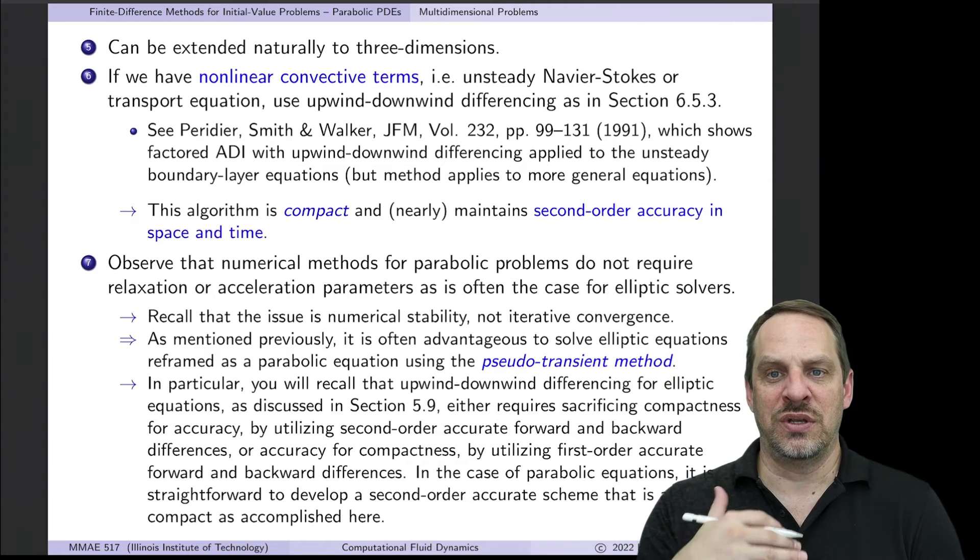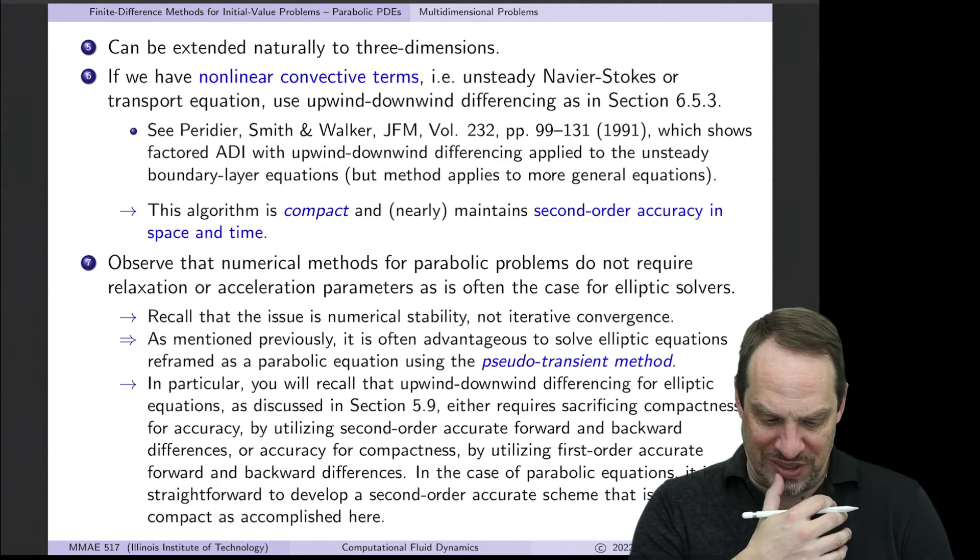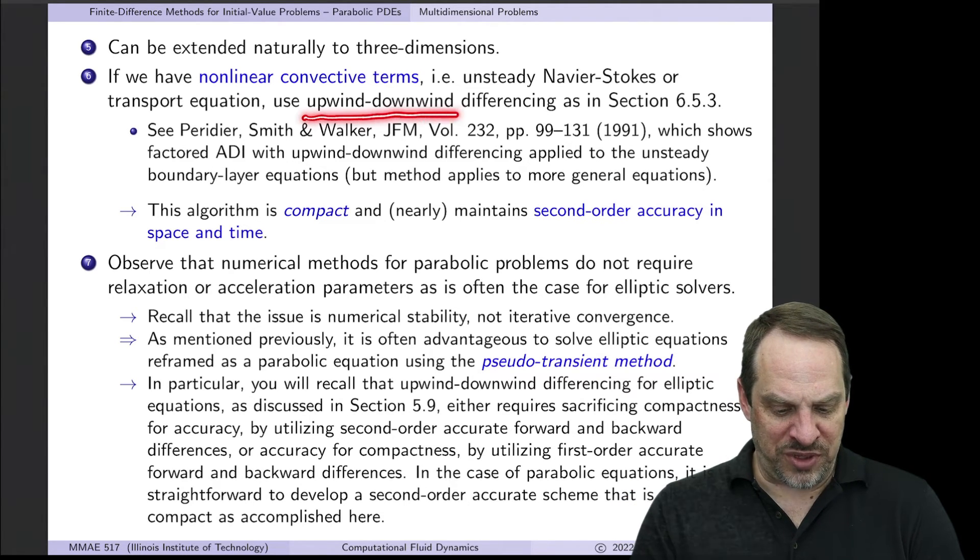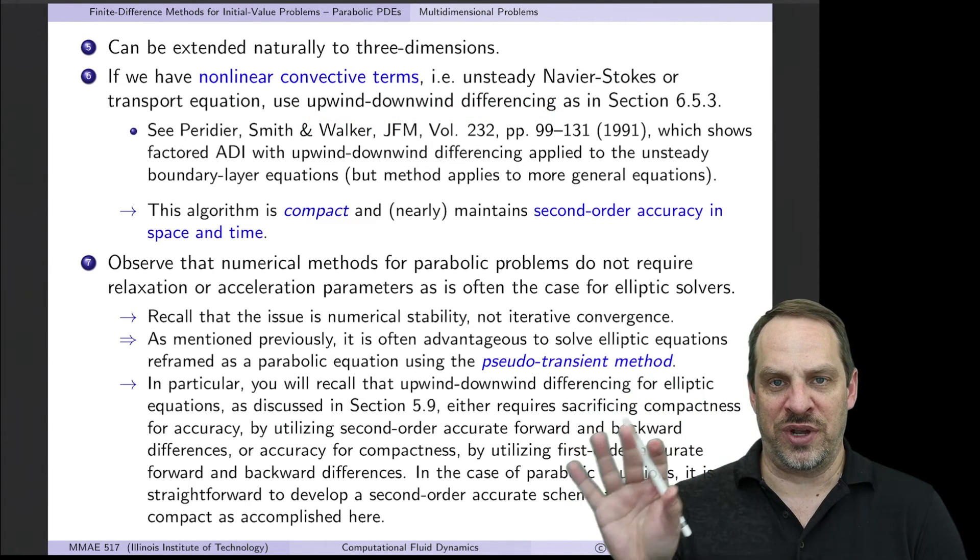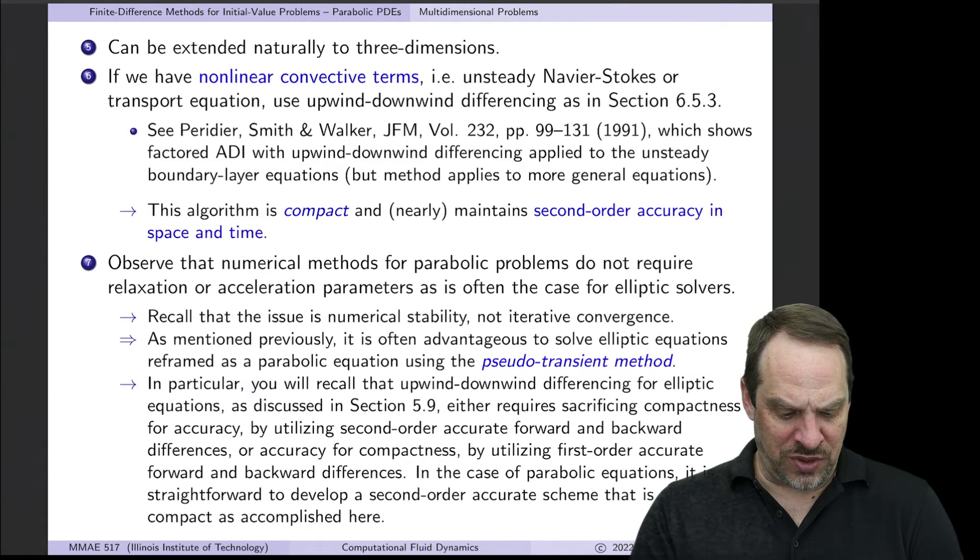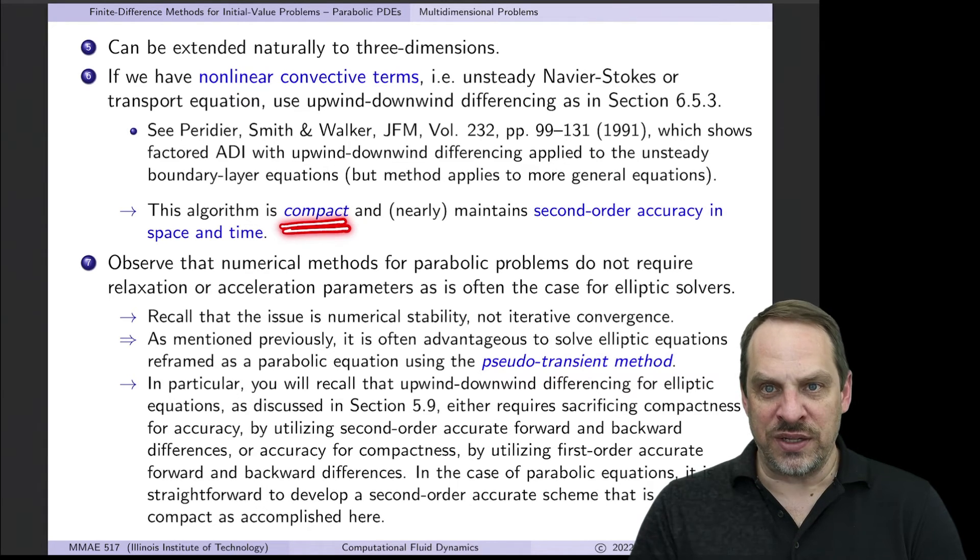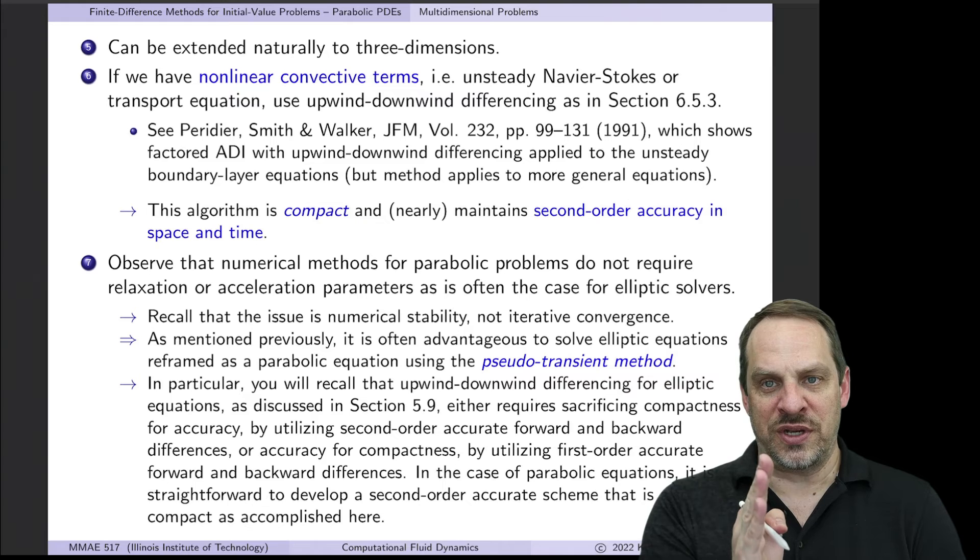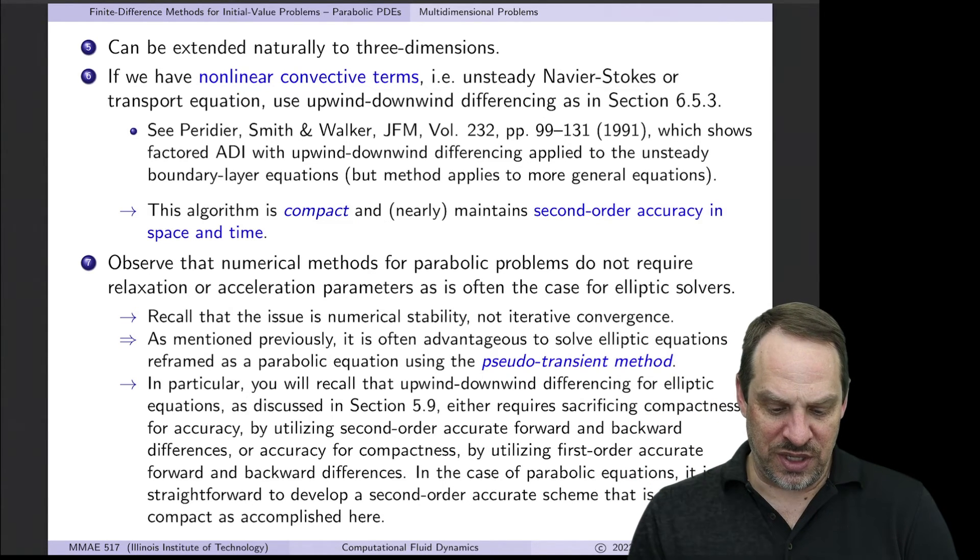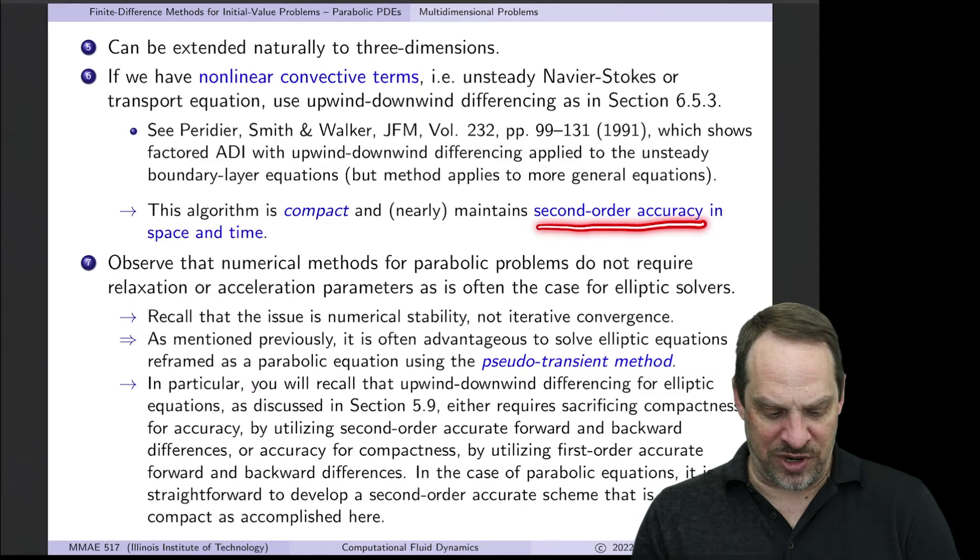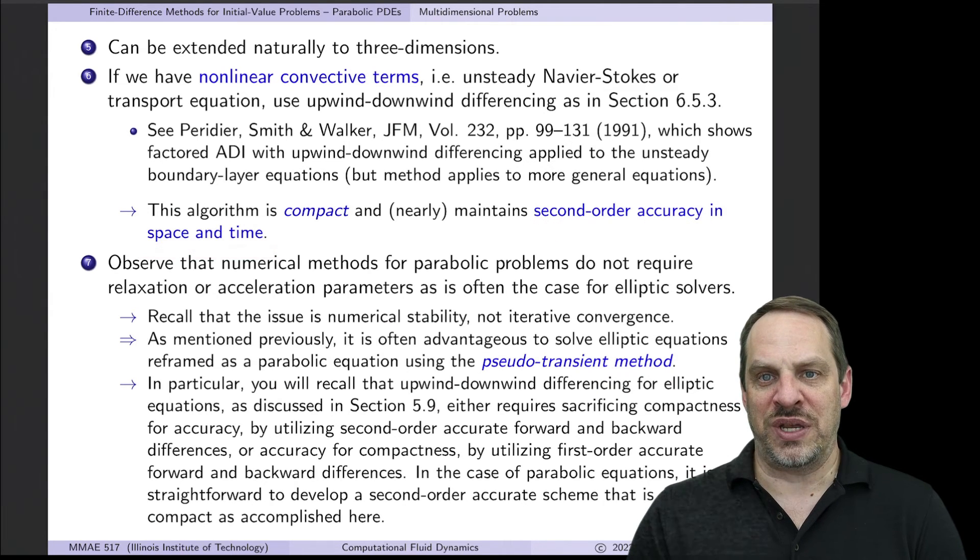But again, no additional hit in terms of numerical stability. We could also incorporate upwinding and downwinding in the same way that we did a couple videos ago using the Crank-Nicholson method. So that works really well. So the method remains compact only involving the point itself, points to the right, left, up and down. So north, south, east, and west in maintaining second order accuracy in both space and time.